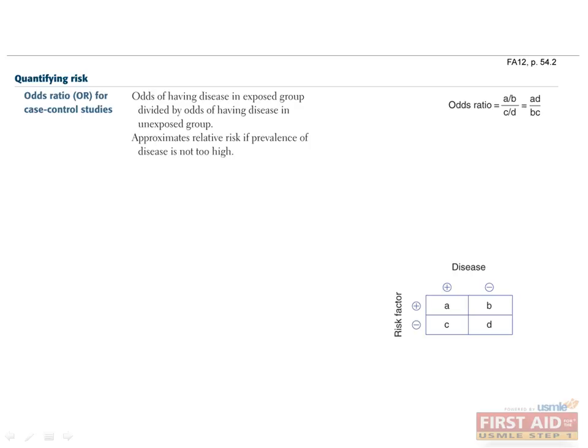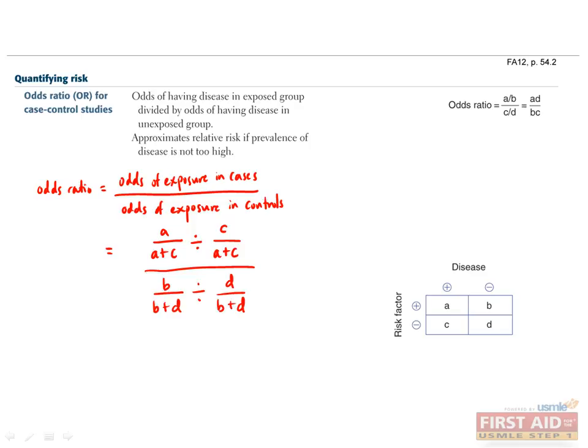Looking at this 2x2 table, we can see that the odds of exposure in the disease group is given by A divided by A plus C over C divided by A plus C. Similarly, the odds of exposure in the non-disease group is B divided by B plus D over D divided by B plus D. Simplifying this expression for the odds ratio yields AD over BC.